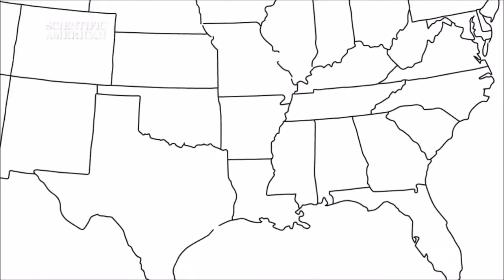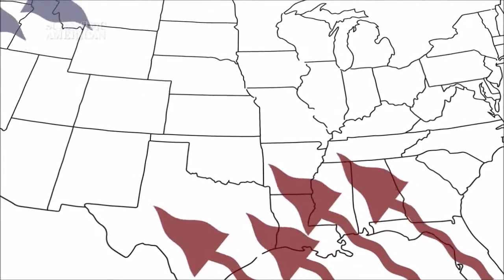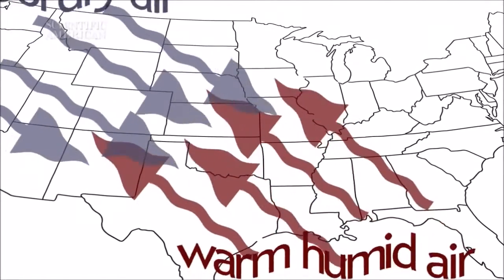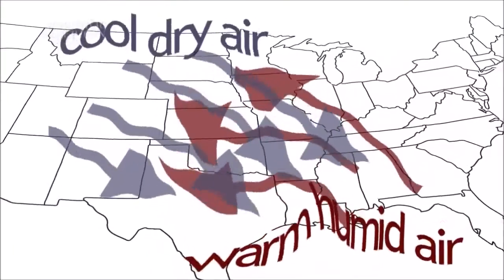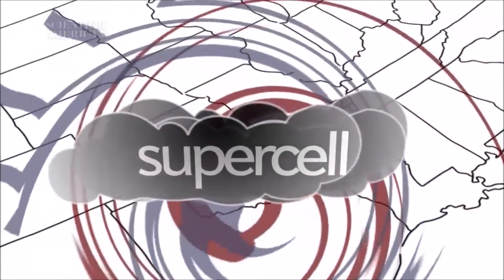Warm humid air low to the ground moves north from the Gulf of Mexico and collides with cool dry air high above the ground rolling in from the Rocky Mountains. The collision of air masses creates a supercell, a massive thunderstorm that has a strong rotating updraft of air.